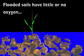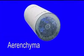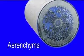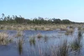Flooded soils have little or no oxygen. Plants tolerate such low oxygen conditions by developing special airspace tissue inside the roots called aerenchyma, which creates an internal aeration pathway that allows oxygen in the atmosphere to reach the roots. This is one mechanism that allows plants to survive flooding.